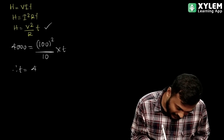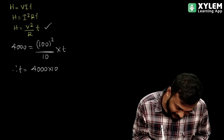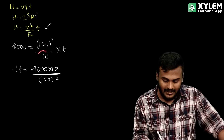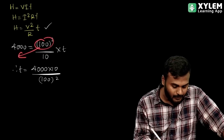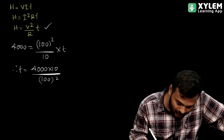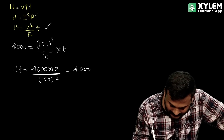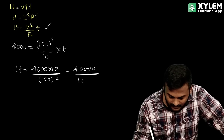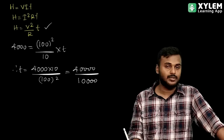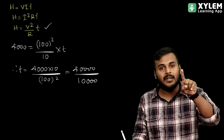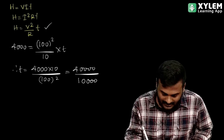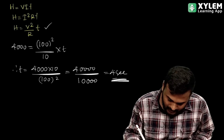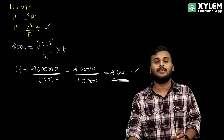So T equals 4000 multiplied by 10 divided by 100 squared. So 4000 divided by 100 squared into 10 equals 4. So the value gives T equal to 4 seconds. That's the answer to the question.